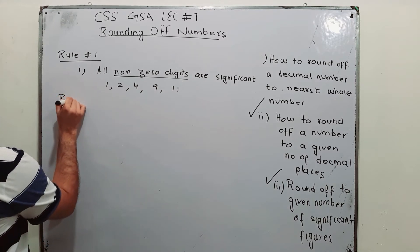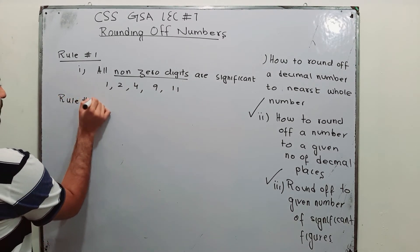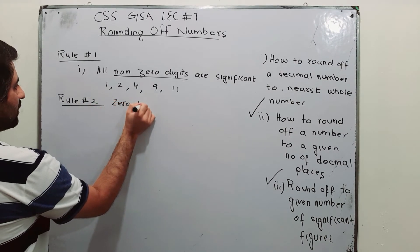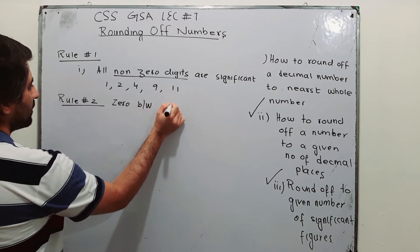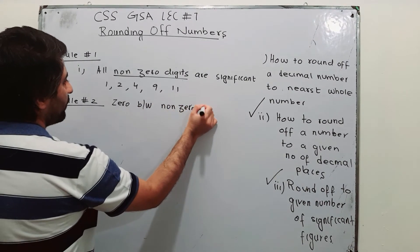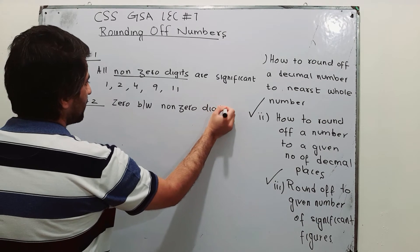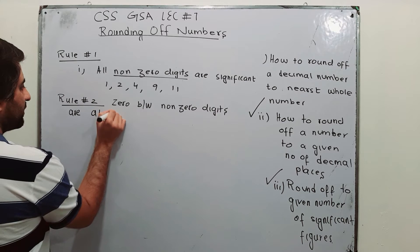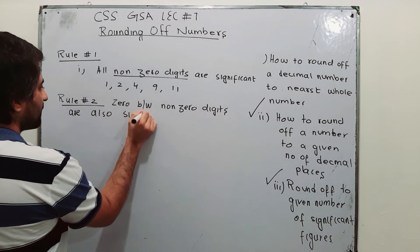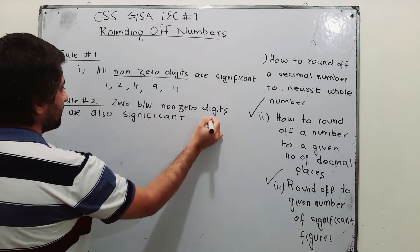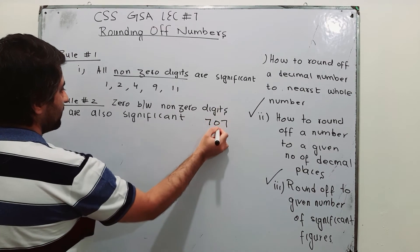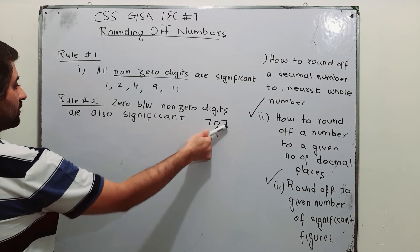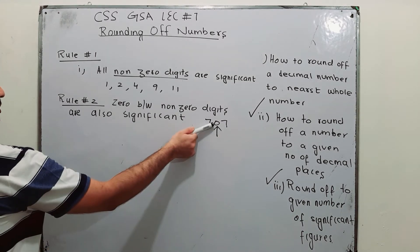Rule number 2: zeros between non-zero digits are also considered significant. For example, in 707, the zero between the two 7s is significant.